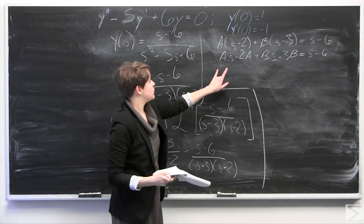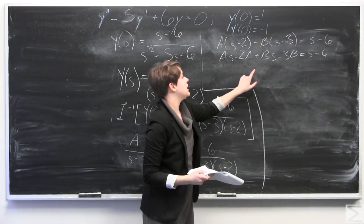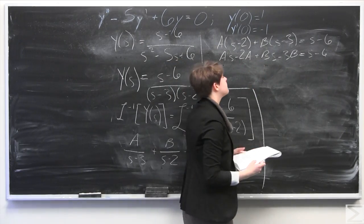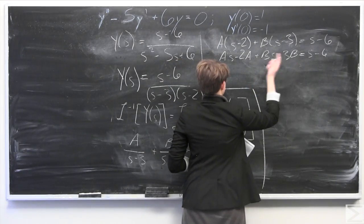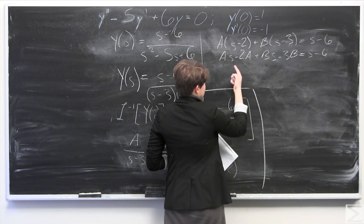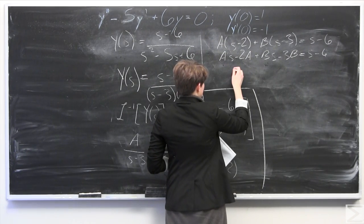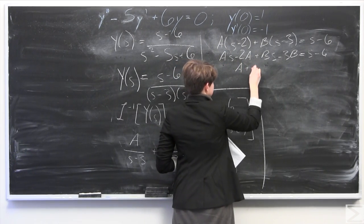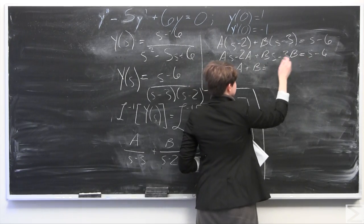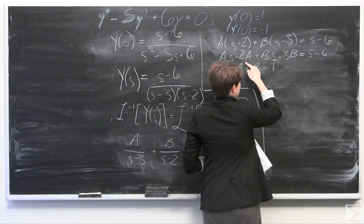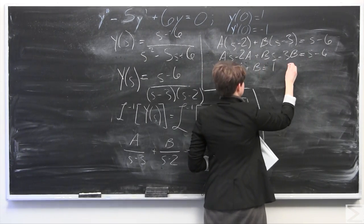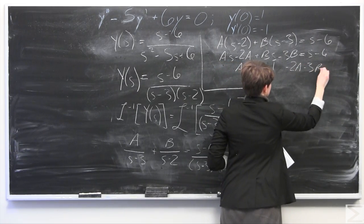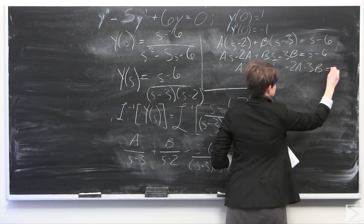Now I'm going to group together all terms with an s and all terms without an s, and set them equal to the corresponding coefficients. The terms with s give us A plus B equals 1. The terms without s give us negative 2A minus 3B equals negative 6.